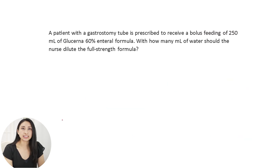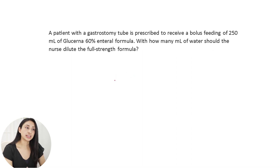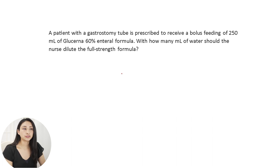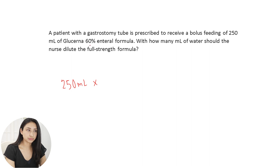The next question is how to dilute full-strength formulas. A patient has a gastrostomy tube and is prescribed a bolus feeding of 250 milliliters of Glucerna 60% enteral formula. How many milliliters of water should the nurse use to dilute the full-strength formula? The order is to give 250 milliliters at a 60% concentration. To begin, we do 250 milliliters times 60%, which we write as 0.6.